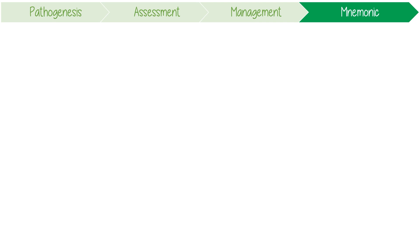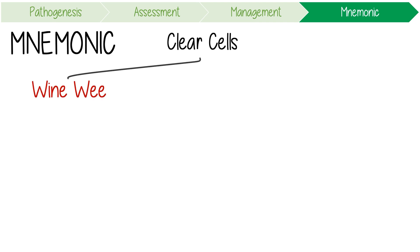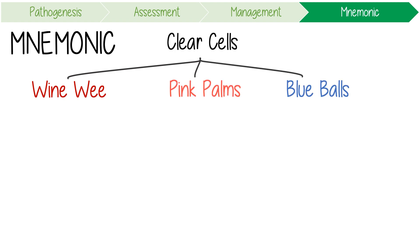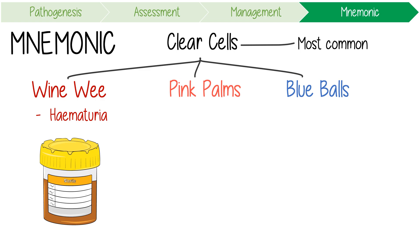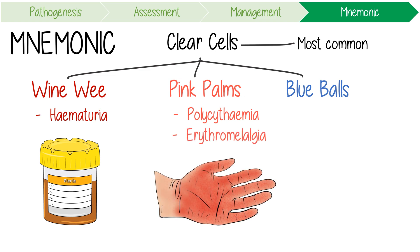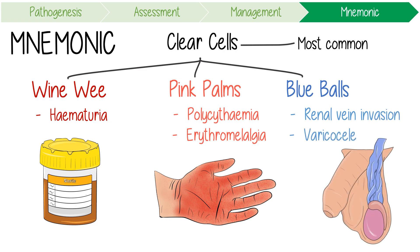To remember some of these important facts, think about renal cell carcinoma as a coloured disease. The mnemonic is that clear cells give you wine-coloured wee, pink palms, and blue balls. This reminds us that clear cell carcinoma is the most common type, the tumour can cause haematuria making your urine red, paraneoplastic syndromes can induce polycythemia making your hands pink from erythromelalgia, and finally tumour invasion into the renal vein can cause a varicocele, giving the scrotum a bag of blue worms appearance.